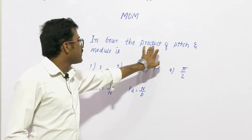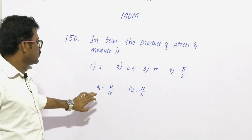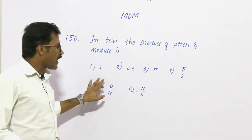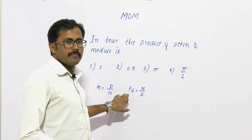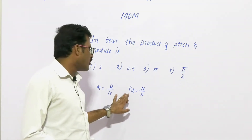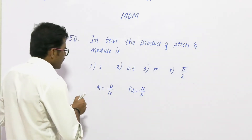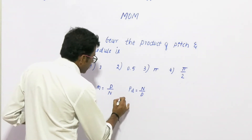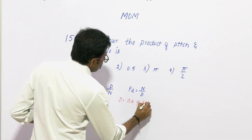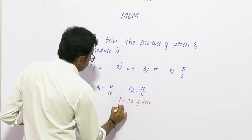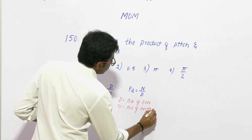What is diameter pitch and what is module? Module is defined as the ratio of diameter of a gear to the number of teeth. Diameter pitch is defined as the ratio of number of teeth to the diameter of the gear, where d is the diameter of the gear and n is the number of teeth on the gear.